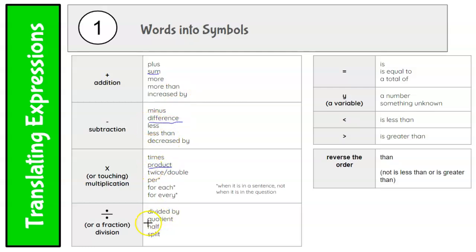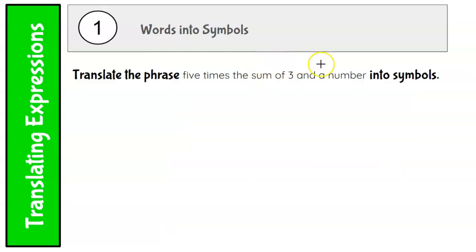It's always going to be phrased like this: the sum of three and a number, the quotient of something and something, the product of something and something, the difference of something and something. So think of this as a phrase together. They go together.